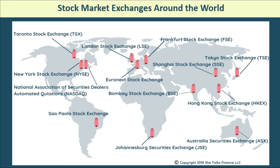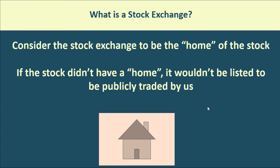This gives you an idea that all over the world, stocks are being bought and sold on exchanges. When we're talking about the stock market, we could be talking about any of these markets around the world. Stock market and stock exchange are terms often intertwined, but you can break it down further and ask: which stock market? The London stock market? The Hong Kong stock exchange? Consider the stock exchange to be the home of the stock — without that home, it wouldn't be listed for public trading.